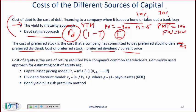Cost of equity is the rate of return required by a company's stockholders. The most commonly used approach is the capital asset pricing model, which also appears in portfolio management and equity. This is a guaranteed exam question — you cannot pass without knowing CAPM. You'll be given the risk-free rate, beta, and the market risk premium.